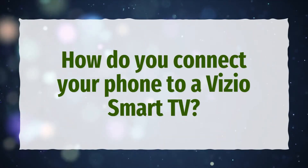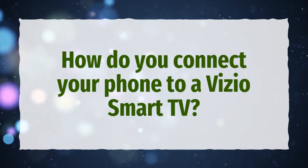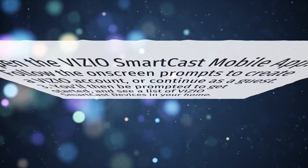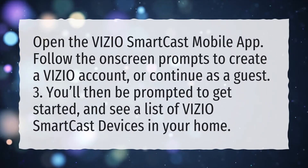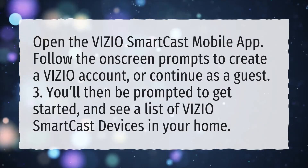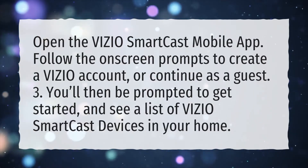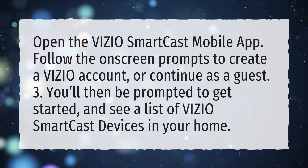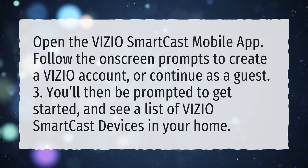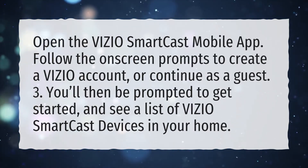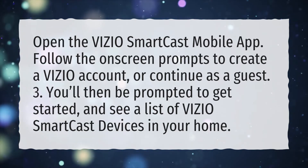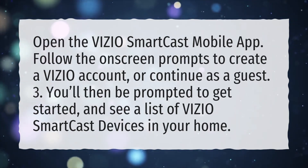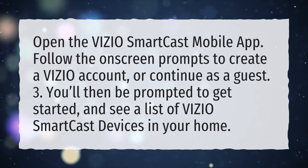How do you connect your phone to a Vizio Smart TV? Open the Vizio SmartCast mobile app. Follow the on-screen prompts to create a Vizio account or continue as a guest. You'll then be prompted to get started and see a list of Vizio SmartCast devices in your home.